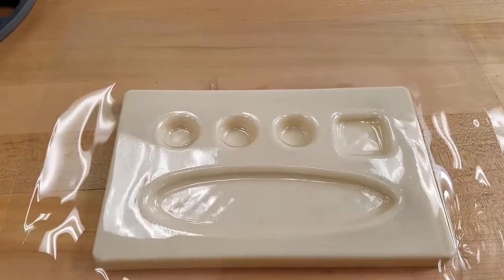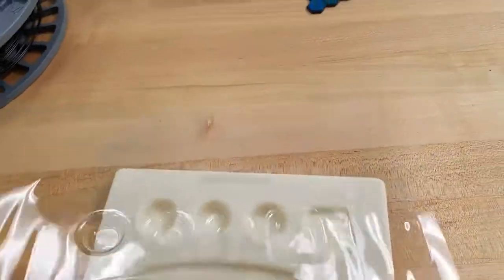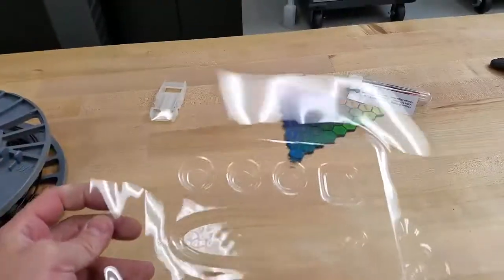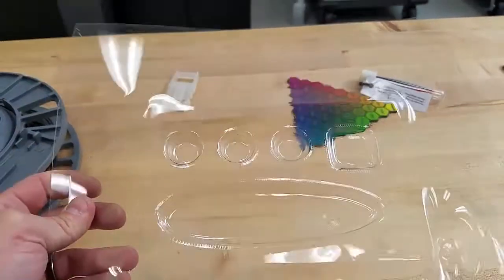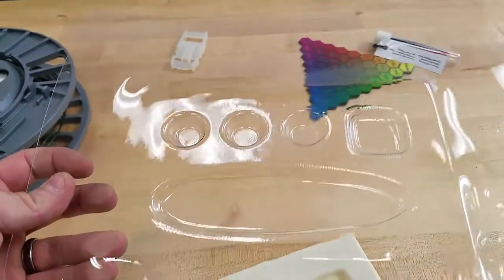So I let it cool, and it's about 10 minutes now, and we should just be able to pop this thing out. Oh, there it goes. There's our vacuum formed blister pack. Now all we need to do is cut it and trim it and glue it.